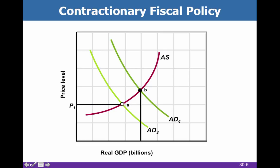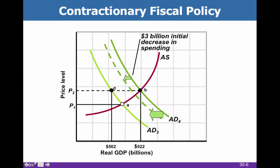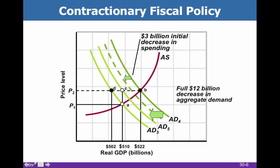We can see inflationary pressure pushing us beyond where we think we should be. The multiplier effect works in both positive and negative directions. Since prices don't really ratchet down, we don't want to go all the way back to the original price level — at point D we'd be back in a recessionary period. We can't push aggregate demand all the way back because the price level won't come back down due to the ratchet effect. The ratchet effect means that once prices go up — like a ratchet wrench that clicks and clicks — they go up but won't come back down.